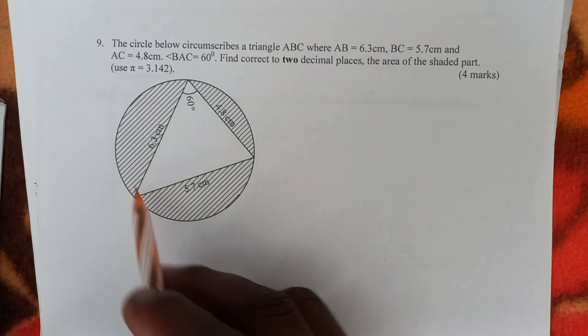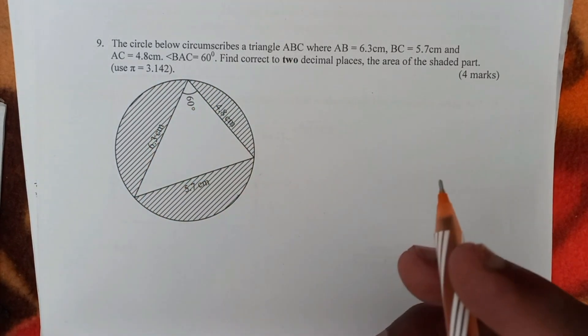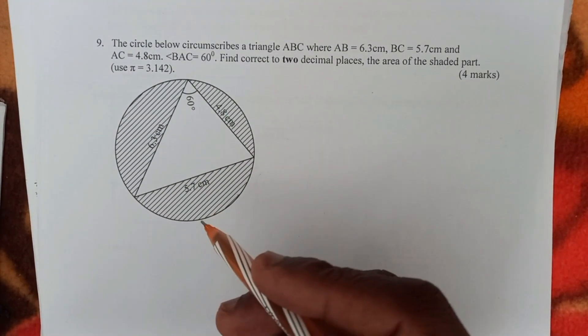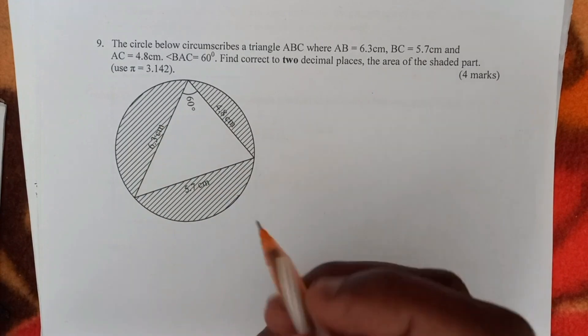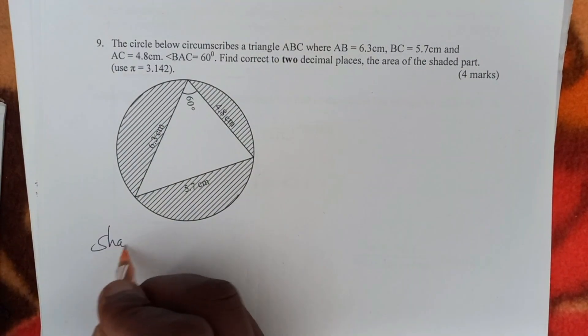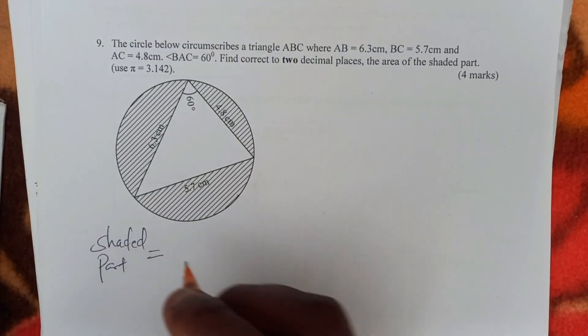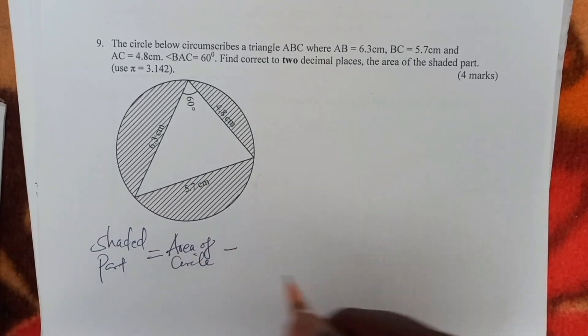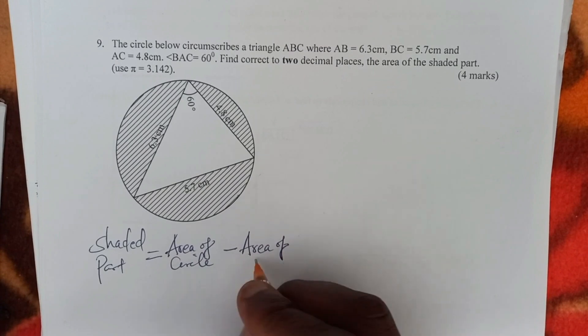Now to find the area of the shaded part, we shall get the area of the circle, then we subtract the area of the triangle, and that will leave us with the shaded part. So shaded part equals area of the circle minus area of the triangle.